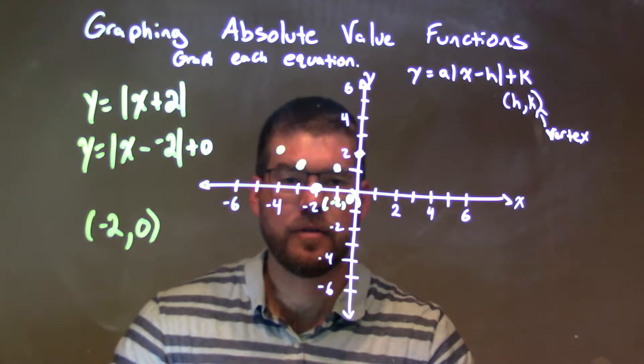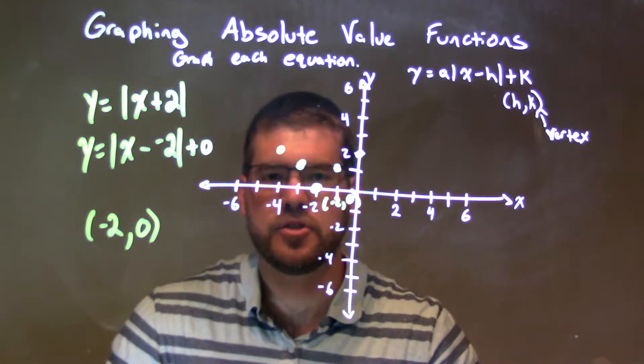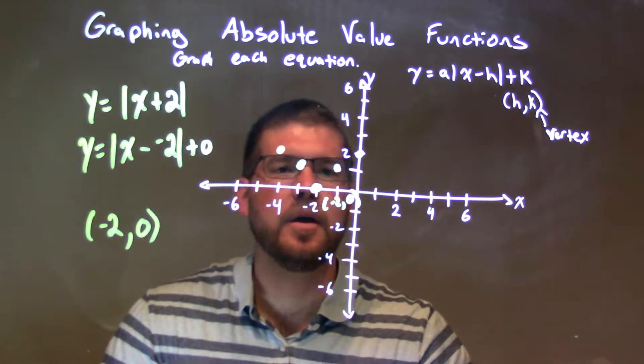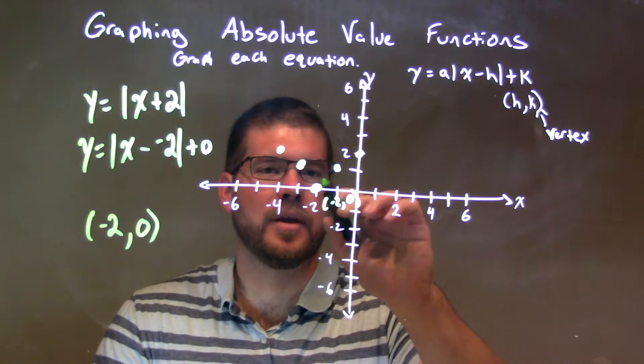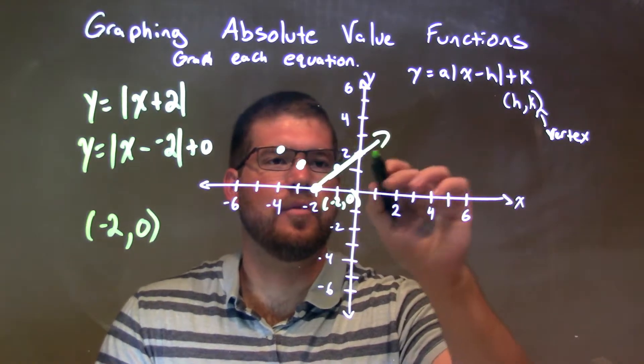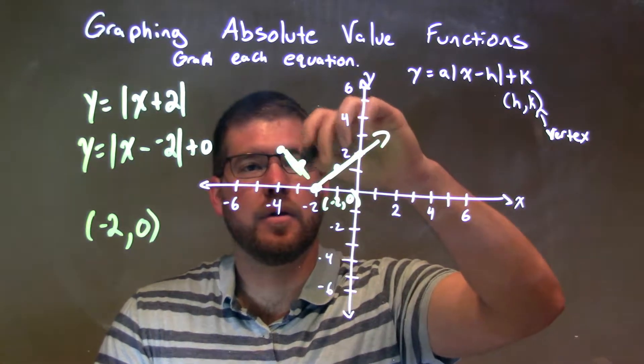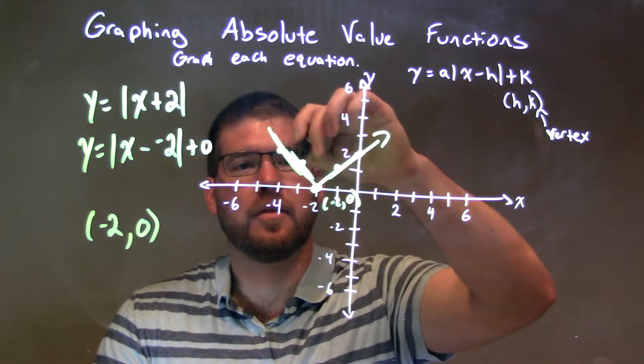Now, we know it's a positive. Since it's a positive, we should know it should have that V shape. And so, our slope is just 1. We connect the dots. You can do more if you want, but I'm good here.